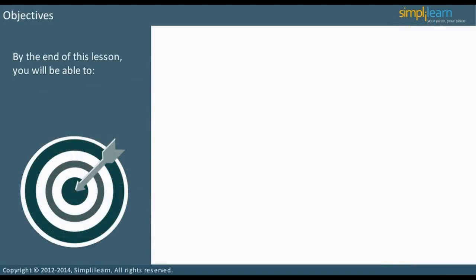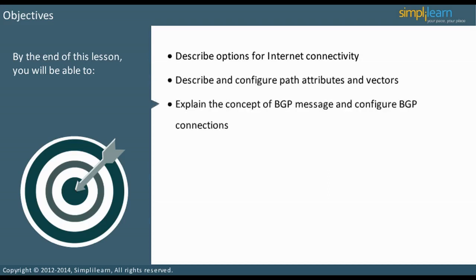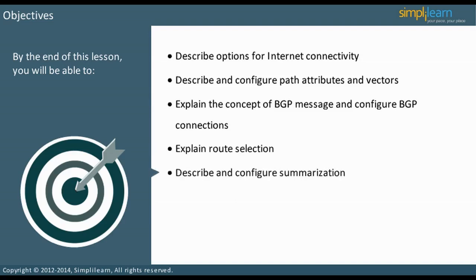By the end of this lesson, you will be able to describe options for Internet connectivity, describe and configure path attributes and vectors, explain the concept of BGP messages and configure BGP connections, explain route selection, and describe and configure summarization.